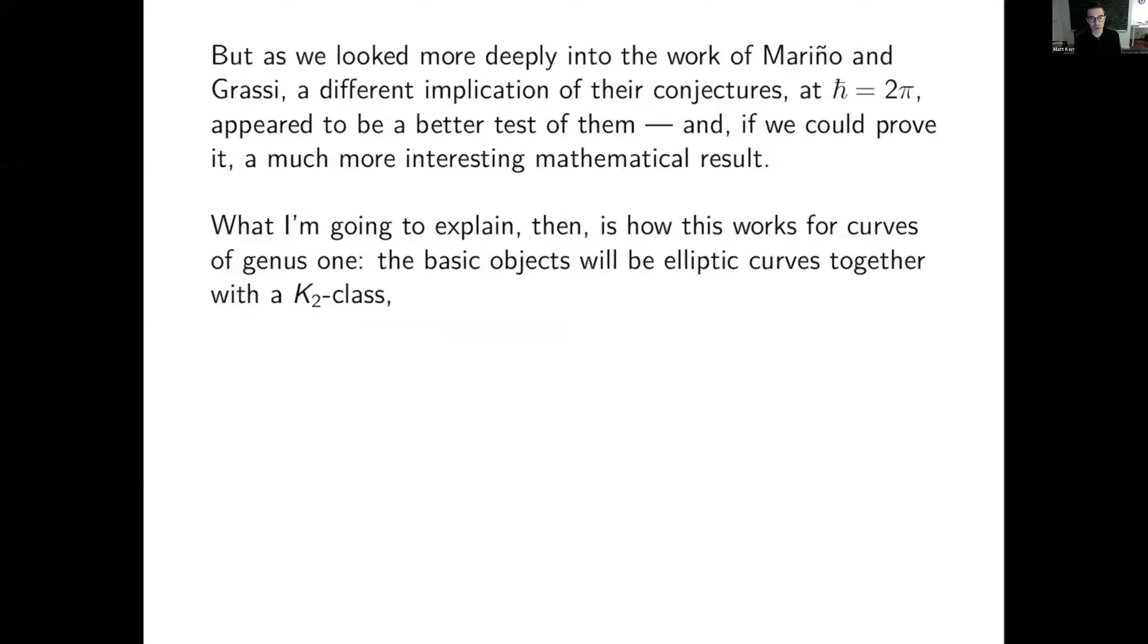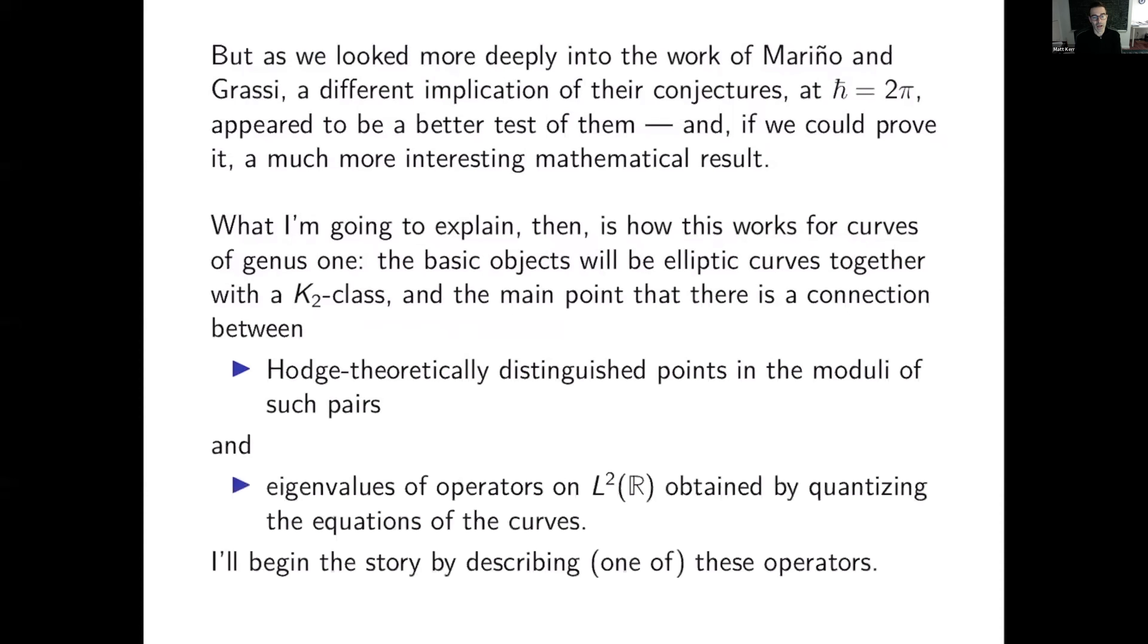So for curves of genus one, on which I'm going to concentrate, the basic objects are going to be such a curve together with a K2 class on it. And the main point is that there's a connection between, on the one hand, Hodge theoretically distinguished points in the moduli of such pairs, and eigenvalues of operators on L2 of R obtained by quantizing the equations of the curves.